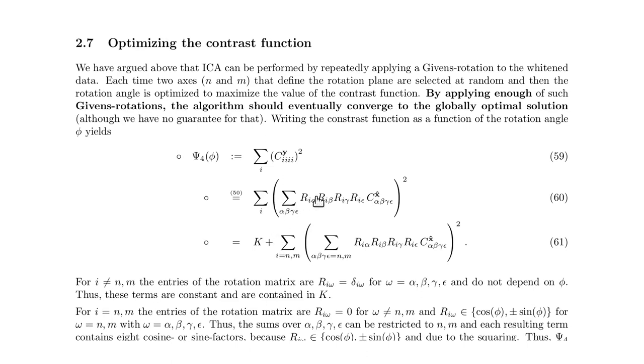And that means we can restrict our i to two components. All the other components would be here and would be constant, would not depend on phi. Only this part depends on phi, but not the constant.